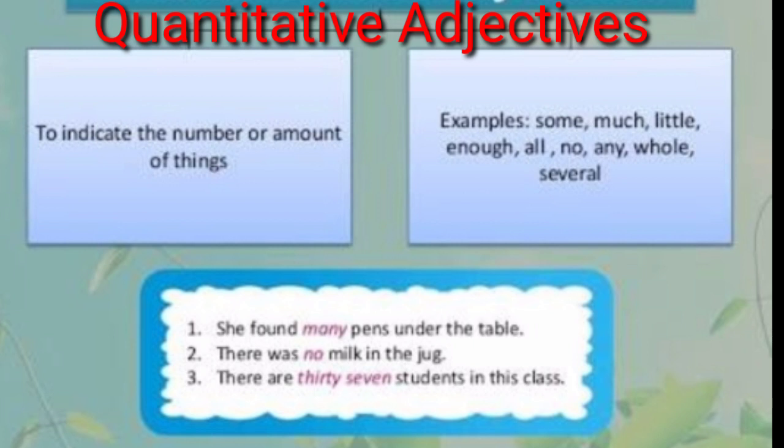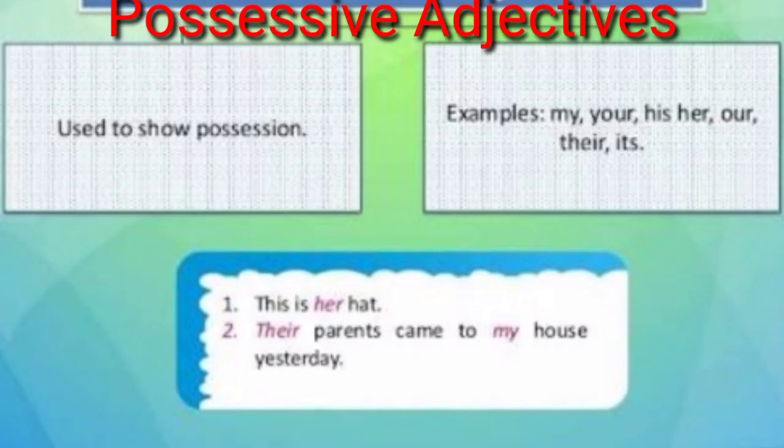So the trick to find a quantitative adjective is to ask a question using 'how many' or 'how much.' Here, many, no, and 37 are our quantitative adjectives.